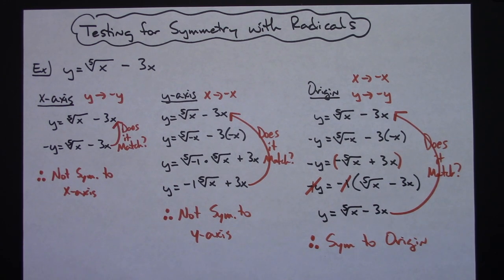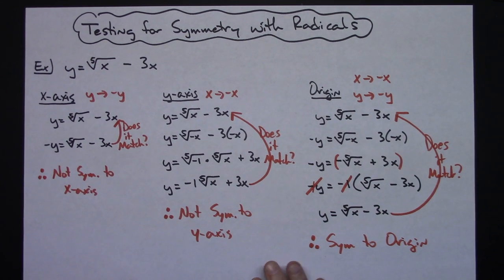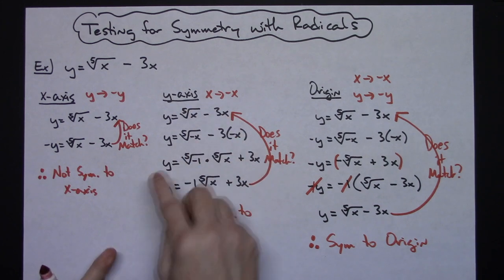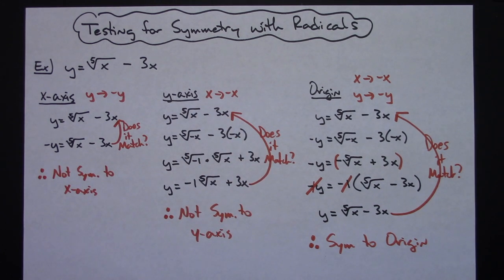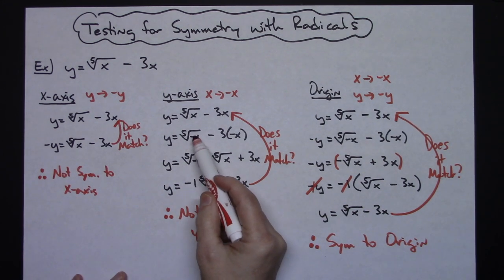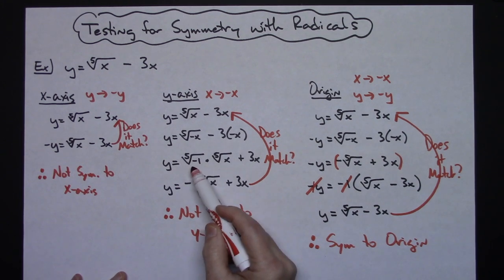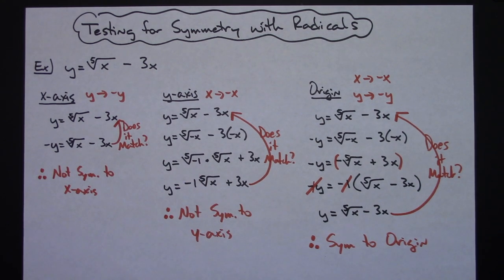I just did this one example to focus specifically on how you handle the fifth root. Hopefully you already knew the general process for checking symmetry around the x-axis, the y-axis, and the origin. The tricky part is plugging in negative x for a radical and simplifying correctly. Thanks for watching — if the videos are helping, please share with your friends and don't forget to subscribe.